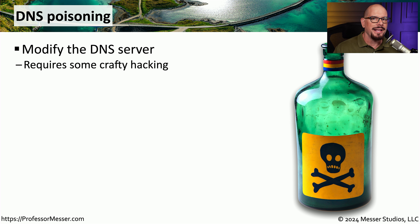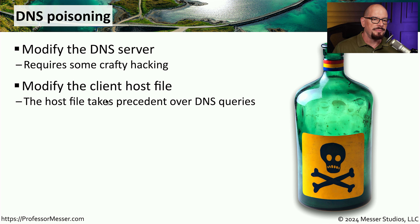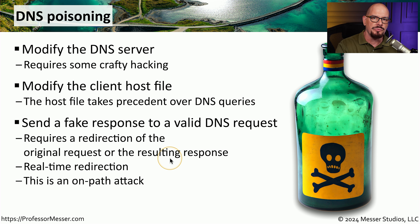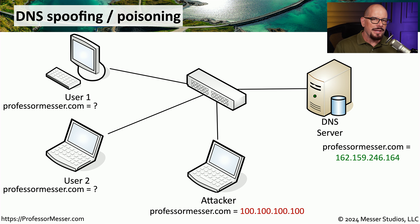Another type of spoofing that can take place is DNS spoofing, also referred to as DNS poisoning, where we are modifying either information contained on the DNS server itself or modifying the responses being sent from the DNS server. We could do this without touching the DNS server by modifying the host file on the client. This host file has a higher priority than DNS responses, and everything in it will always take precedence over anything on a DNS server. DNS poisoning works by sending fake responses to legitimate DNS requests, which may require changing information on the fly in real time between the DNS server and the victim machine — a perfect scenario for on-path attacks.